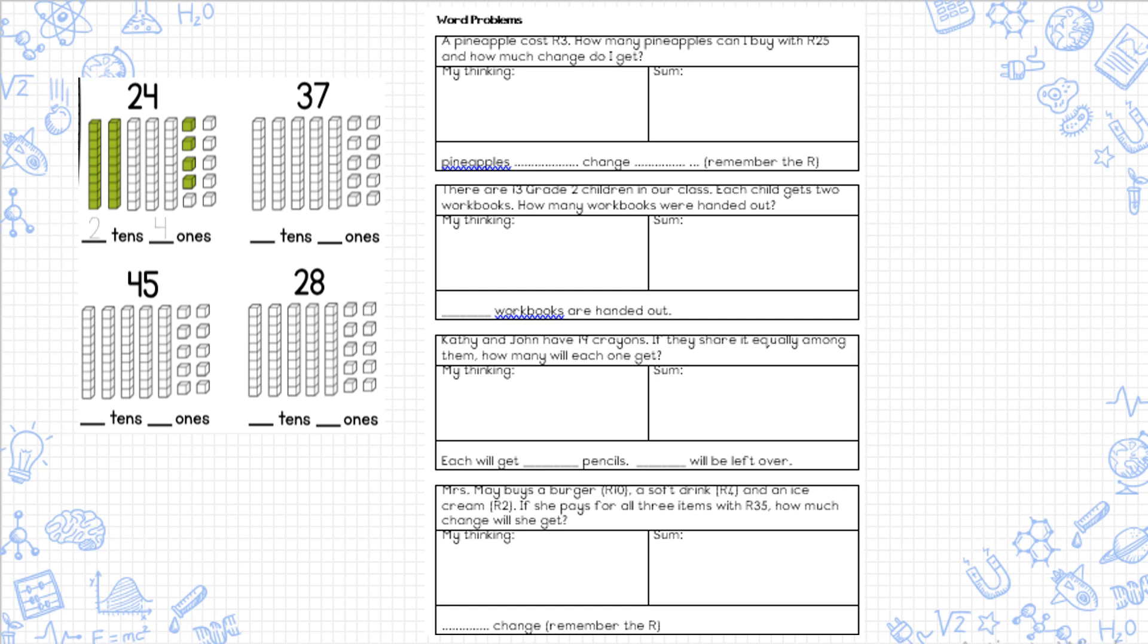Let's look at the first one. It says a pineapple costs three rand. How many pineapples can I buy with 25 rand and how much change do I get? Now this is a tricky one, so I need you to think carefully. You first need to go work out how many pineapples you can buy, so go counting threes and try and get as close to 25 as you can. After that, you have to do another sum to work out how much change you will get.